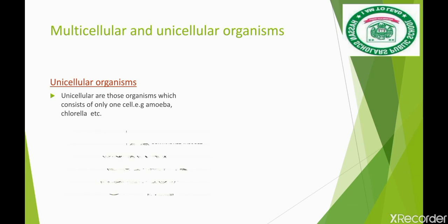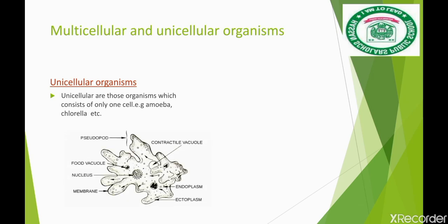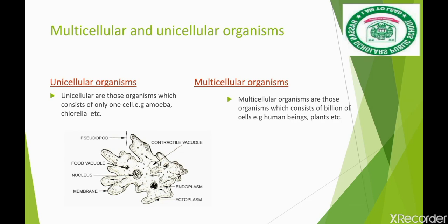Examples of unicellular organisms are amoeba and florella. Here is the diagram of amoeba, which is a unicellular organism. The second type is the multicellular organism. Multicellular organisms consist of billions of cells, for example, animals and plants. All higher animals are multicellular organisms.